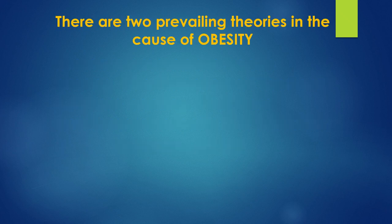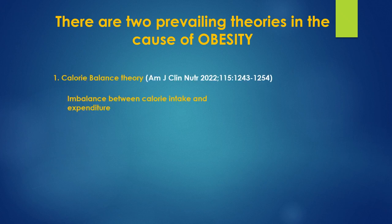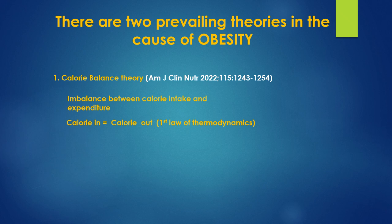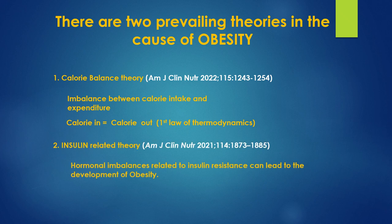There are two prevailing theories in obesity. First is the calorie balance theory, which states that calories in equals calories out — if you eat more and burn less, you gain weight, and vice versa. This is the first law of thermodynamics. However, our body is not a closed system; we are an open system influenced by our own hormones. Hence the second theory: the insulin-carbohydrate-related theory, which states that hormonal imbalances related to insulin resistance can lead to the development of obesity.